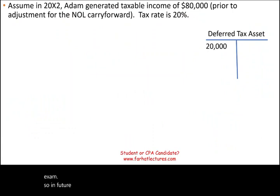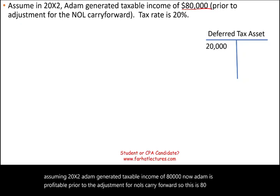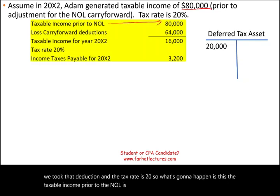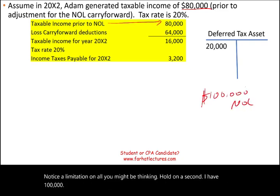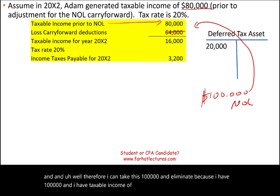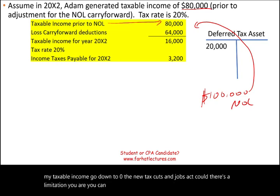In future years, Adam Company is starting with a deferred tax asset of $20,000. Assume that in 20X2, Adam generated taxable income of $80,000 — now Adam is profitable prior to the adjustment for NOL carry forward. The tax rate is 20%. Now there is a limitation on NOL. You might be thinking you have $100,000 in NOL, so you can eliminate the whole $80,000 and make your taxable income go down to zero. But under the Tax Cuts and Jobs Act, there's a limitation: you can eliminate up to 80% of your taxable income. So 80% of $80,000 is $64,000.